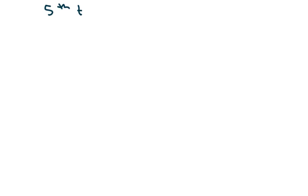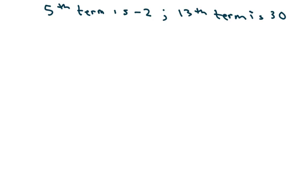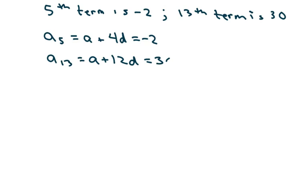Your next one: the fifth term is negative 2, and your thirteenth term is 30. So a sub 5 equals a plus 4d equals negative 2, and a sub 13 equals a plus 12d equals 30. My system of equations therefore would be a plus 12d equals 30, and a plus 4d equals negative 2. I subtract.